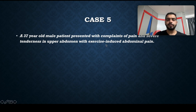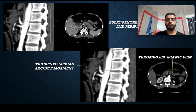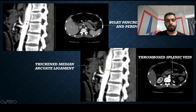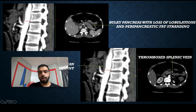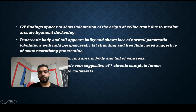The next case was a 37-year-old male patient who presented with complaints of pain and severe tenderness in the upper abdomen with exercise-induced abdominal pain. On CECT sagittal sections, the thickened median arcuate ligament measures 6.4 mm. On the axial images, a bulky pancreas is seen with loss of lobulations and peripancreatic fat stranding.